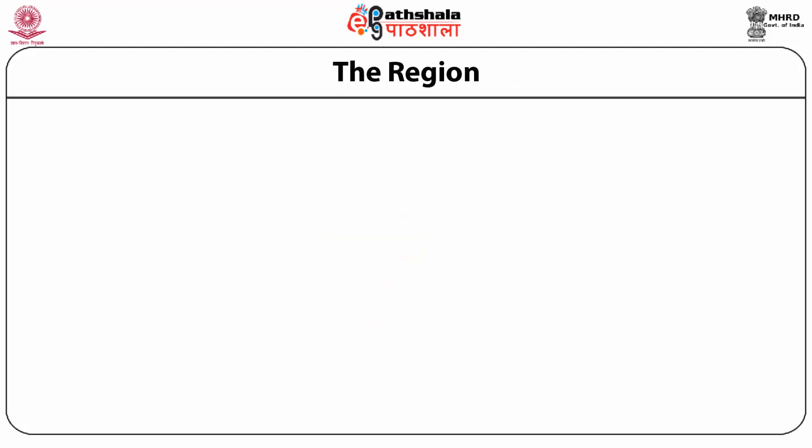The CNU has suggested nine principles for each of three levels: the region, the neighborhood/district/corridor, and the blocks and buildings. Thus, there are 27 principles in all for following the strategy of new urbanism as charted by CNU. First of all, let us discuss about the region.